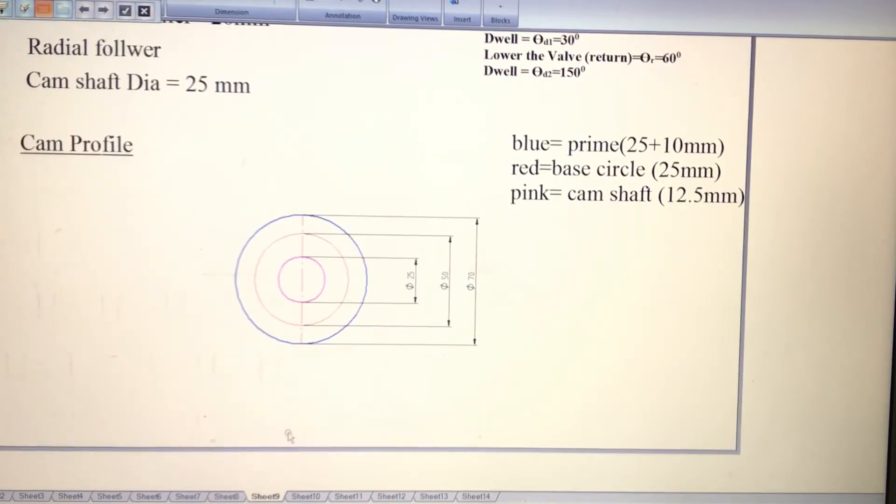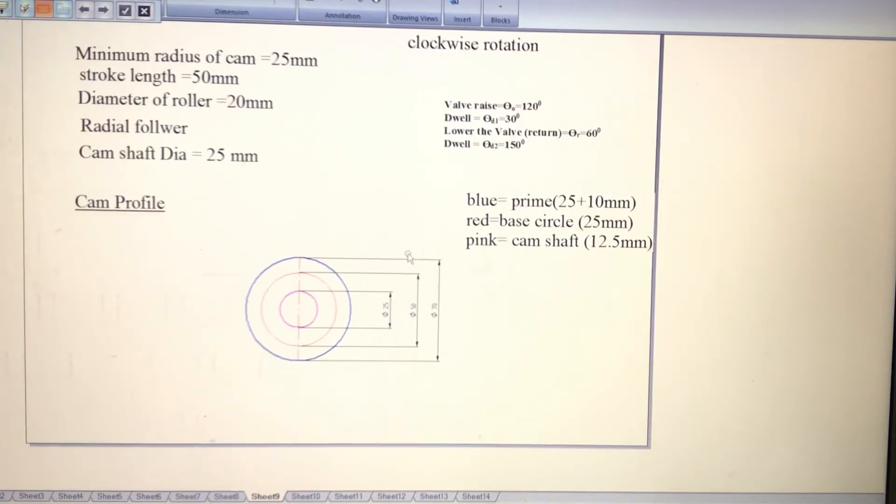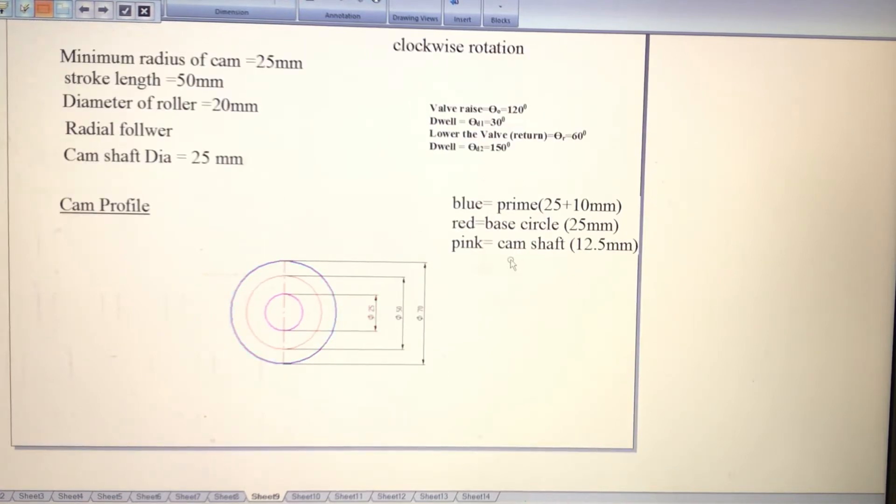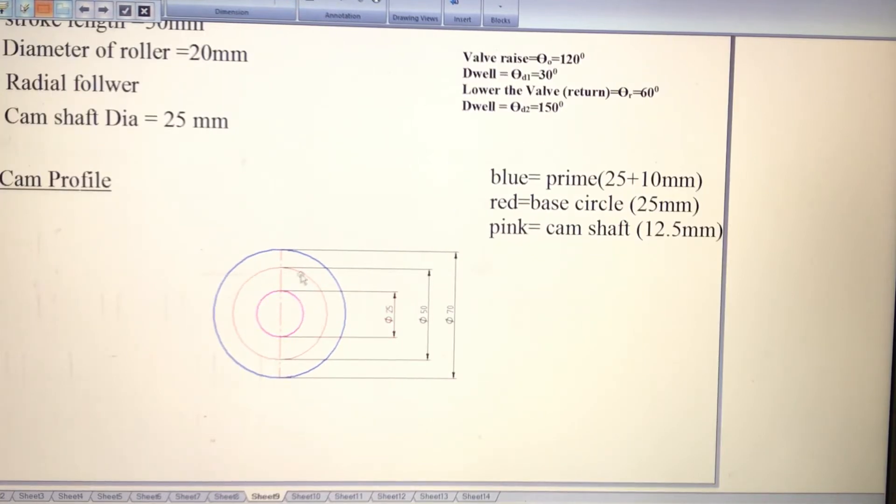For the cam profile, you have a minimum radius of cam as 25 mm, meaning diameter is 50 mm. That is your base circle - this red color circle indicates the base circle. Next, the pink color circle, that is the cam shaft. The cam shaft diameter is 25 mm.